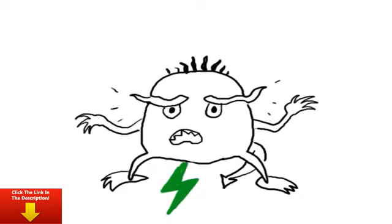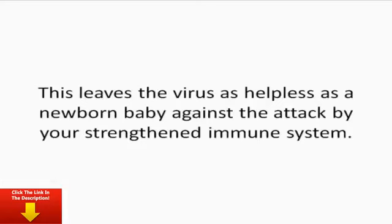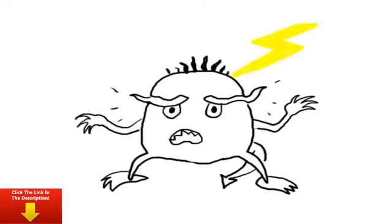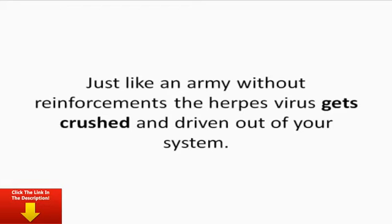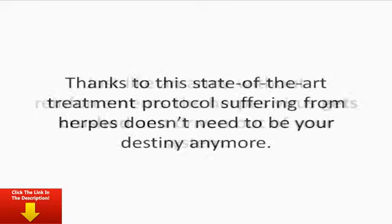The second angle from which the Ultimate Herpes Protocol attacks the virus is by dissolving its protective protein coat. This leaves the virus as helpless as a newborn baby against the attack by your strengthened immune system. As a last measure, the Ultimate Herpes Protocol stops the virus from making copies of itself. Just like an army without reinforcements, the herpes virus gets crushed and driven out of your system. Thanks to this state-of-the-art treatment protocol, suffering from herpes doesn't need to be your destiny anymore.